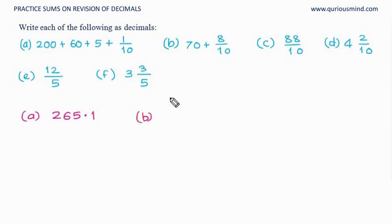Let's do B. We see 70 plus 8 upon 10. 70 is a whole, so 70.8 tenths. It is 8 here. In the tenth place we have 8.